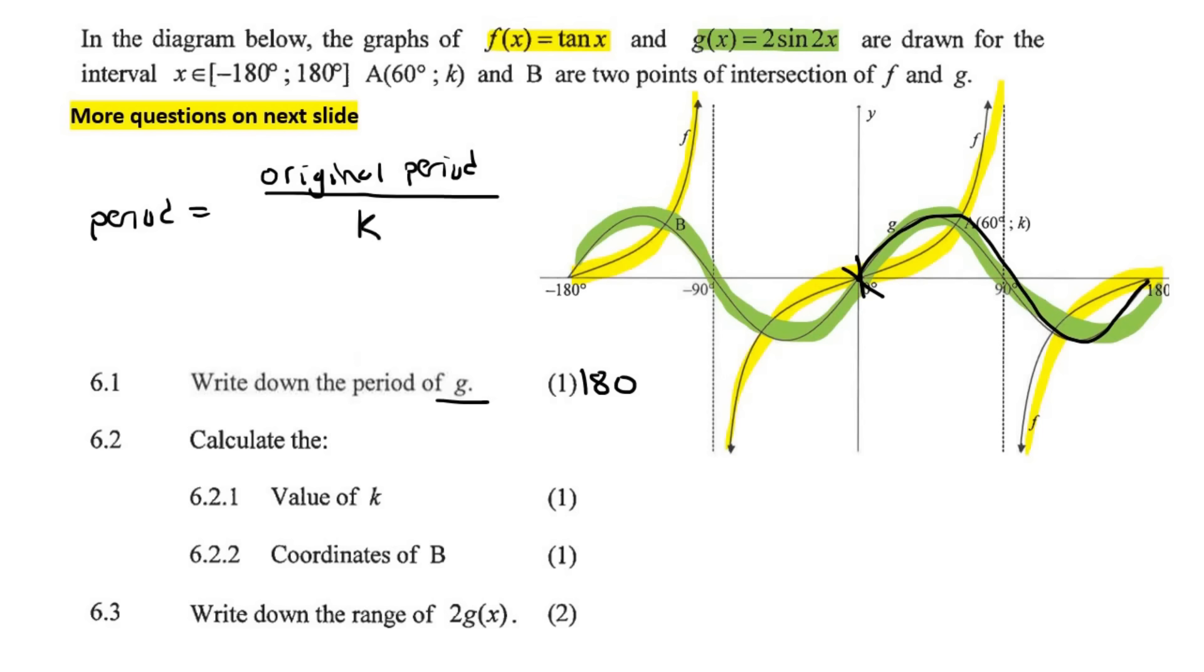And then you divide it by K. Now what do I mean by K? It's this number in front of the X. You know how I sometimes show y equals to A sin of K X minus P plus Q. Well, that K is what I'm talking about. So the original is 360. The K value they've told us here is a 2. And that'll give us 180.